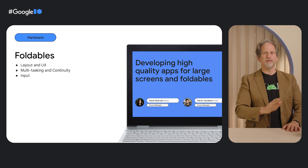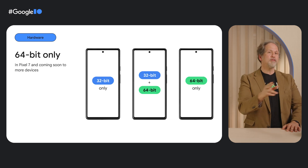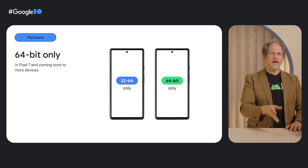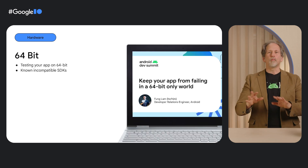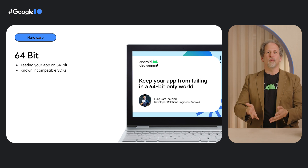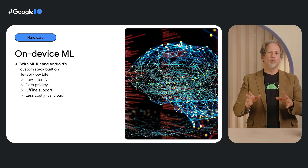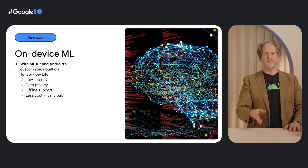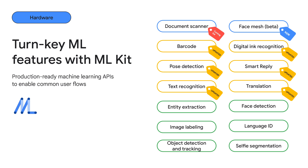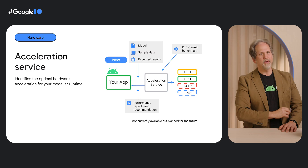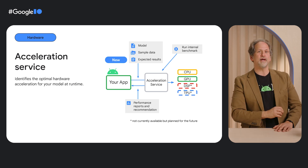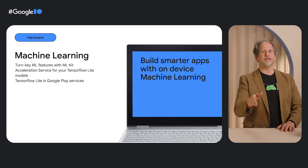This talk covers input as well as user interface and multitasking for large screens. In the near future, Android is moving towards having 64-bit-only devices. Hybrid devices that support 32-bit and 64-bit code are going away soon, and in the future, expect to only see 64-bit devices. Watch Keep Your App From Failing in a 64-bit-only World for more information on how to test your app, information on potential incompatibilities, and more. As hardware gets more capable, our devices are going to get smarter with the use of on-device ML. ML Kit provides turnkey features such as barcode scanning, translation, and smart replies. Base mesh is in beta and document scanner is coming soon. The acceleration service runs an on-device benchmark with your model and data sample, returning a hardware configuration recommendation that you can apply to your TensorFlow Lite interpreter. It supports inference on CPUs and GPUs today, and the future plan is to add more core types.